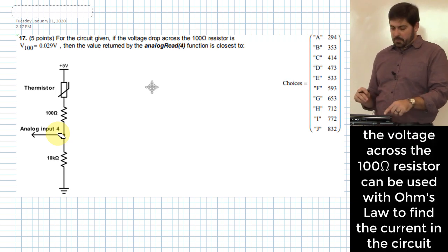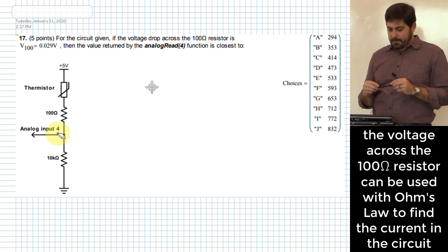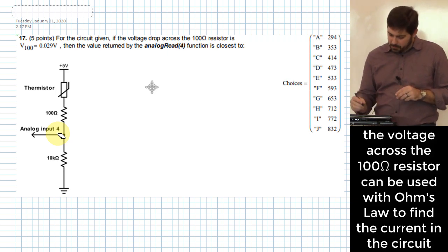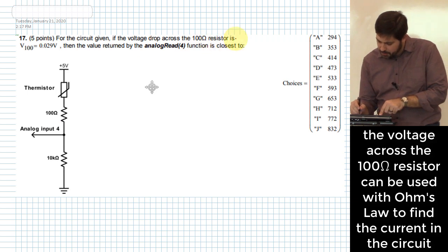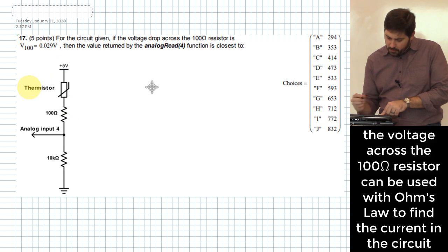All right, so what do we need to do first? Okay, it says voltage drop across the 100 ohm resistor is 0.029 volts.